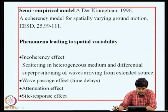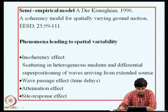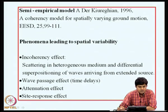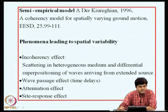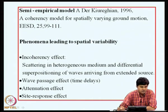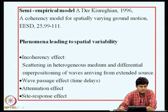If we consider two points on the ground surface and want to model the ground accelerations at these two points as a pair of random processes, we have already seen how to model the individual components through their auto PSDs. Our basic objective is to model the cross PSD, which essentially boils down to modeling the coherency function. The coherency function captures the spatial variability characteristics.